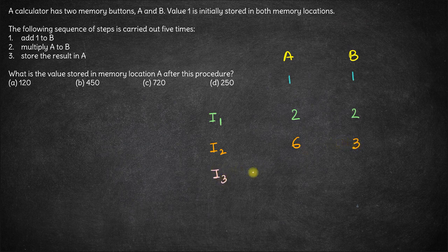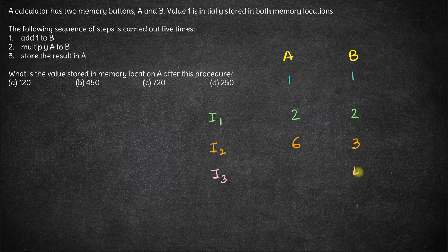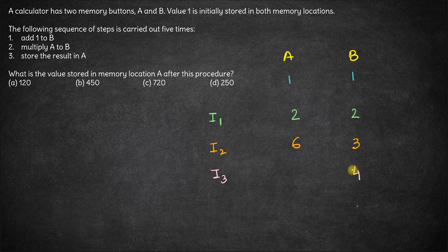In the third iteration, we add 1 to B, which becomes 4, then multiply A with B to get 24 and store this in A. So A becomes 24.